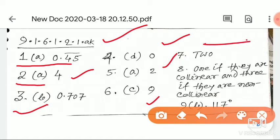And 8th question ka answer chai, 1 hoga if the 3 points are collinear and 3 lines honge if they are non-collinear. Question number 9th ka B option hai, that is 117 degree. Detail solution ke baad mein.